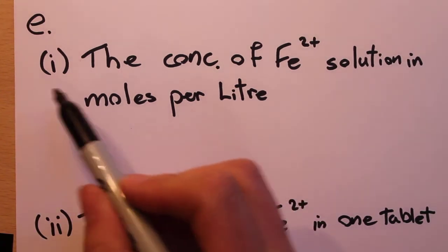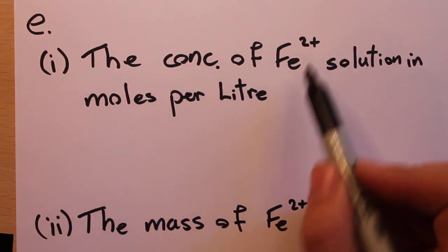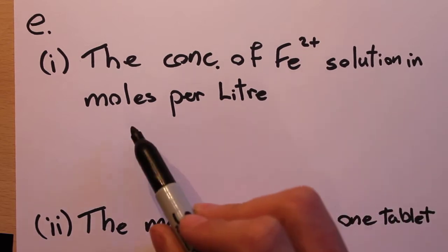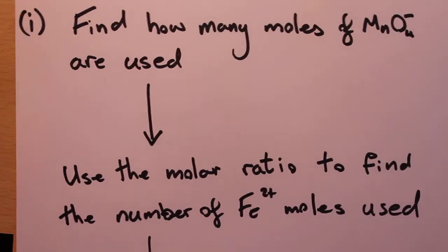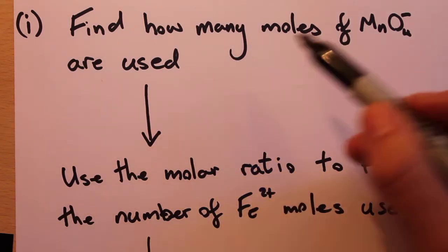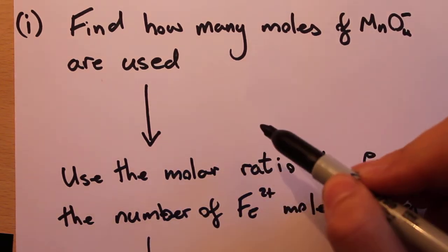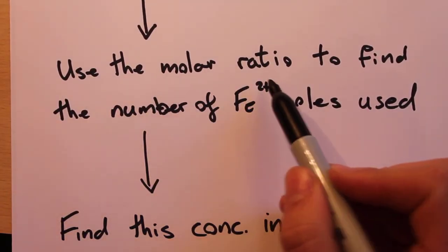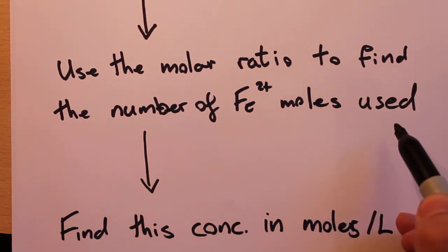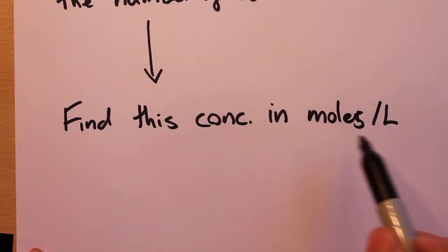In the first part of this question we are asked to calculate the concentration of Fe²⁺, our iron solution, in moles per liter. To do this we need to follow a process: first find how many moles of MnO4⁻ are used in the experiment, then use the molar ratio to find the number of Fe²⁺ moles used, and finally find the concentration in moles per liter.